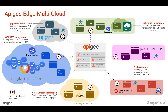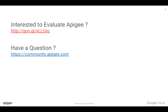So Apigee will work like a brain, and all the gateways can sit on multiple clouds acting like modules. We're going to see more in detail about Apigee on-premises in this series. Stay tuned.